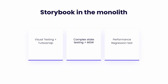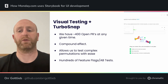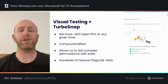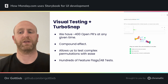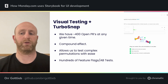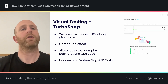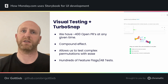We use Storybook for three main things in the monolith. First, visual testing with TurboSnap. We are running visual testing on Chromatic and have around 400 open PRs at any given moment. Adding to that what we call the compound effect — we reuse a lot of our building blocks all around the system, and each PR may change some of these blocks. Visual testing helps us identify breaking changes in our CI/CD. We use TurboSnap to identify changed files and run only the relevant stories, cutting down costs and making our CI/CD much quicker.